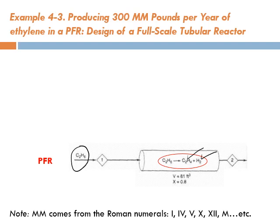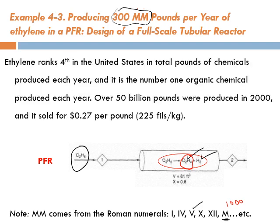The example requires producing 300 MM pounds per year. What does MM refer to? You know that M is a Roman numeral referring to one thousand, so MM is one thousand times one thousand — that is one million. So we want to produce 300 million pounds per year of ethylene.